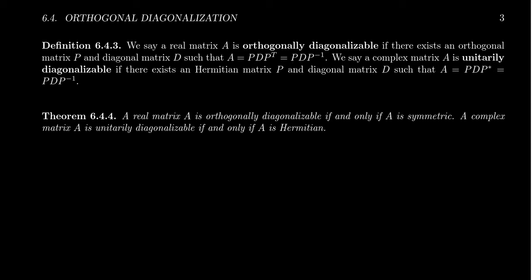This leads to a broader idea of what we call an orthogonal diagonalization. We might say a real matrix A is orthogonally diagonalizable, which certainly does mean that you can diagonalize the matrix. But when you diagonalize the matrix, you can use an orthogonal matrix P — this transition from matrix A to the diagonal matrix — and because P is orthogonal, its inverse is just equal to its transpose.